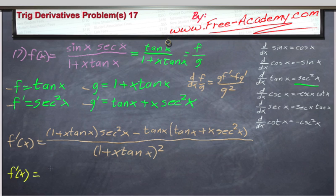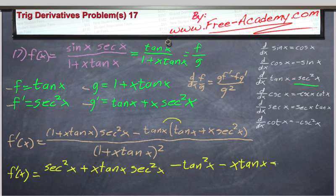f of x is equal to, multiplying out the secant squared x, secant squared x plus x times the tangent of x times secant squared x. And this will be minus tangent times tangent, tangent squared x minus x tangent of x times secant squared x.